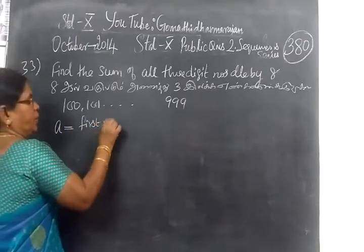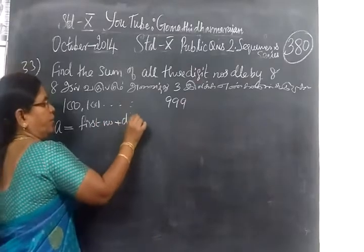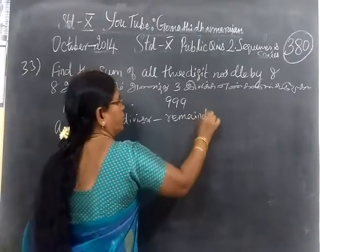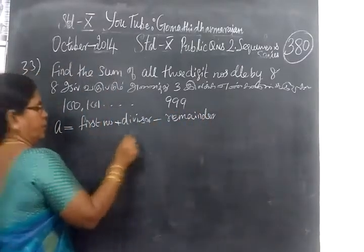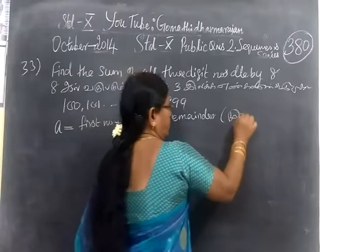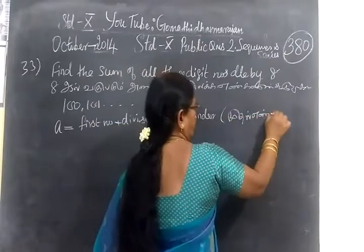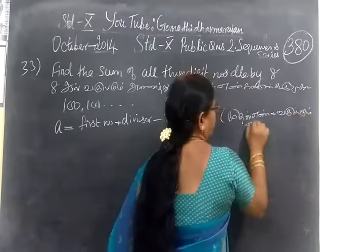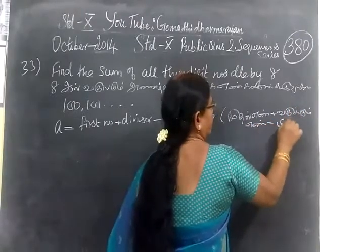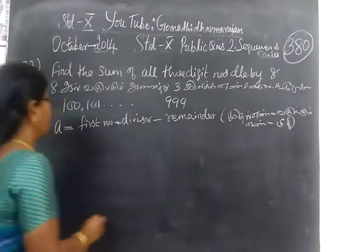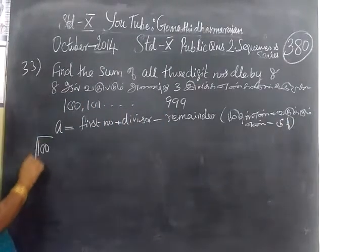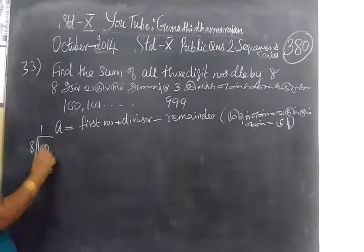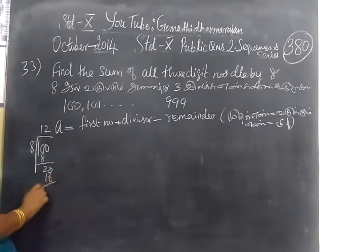The formula is first number plus divisor minus remainder. So first number is 100. It is divided by 8, 1 times 8 is 8 balance 20, 2 times 16 balance 4.